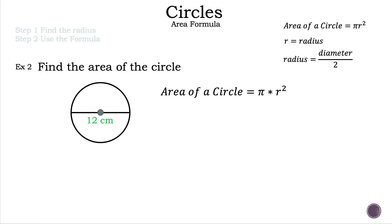Now let's take a look at example two. Once again, our first step is to write down the area formula for circles, which is pi times radius squared. We can take a look at the circle, which gives us the measurement 12 centimeters.